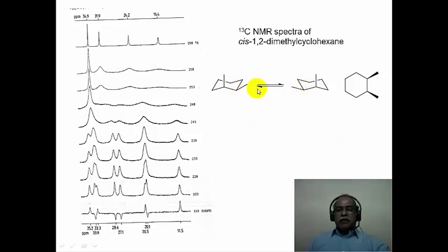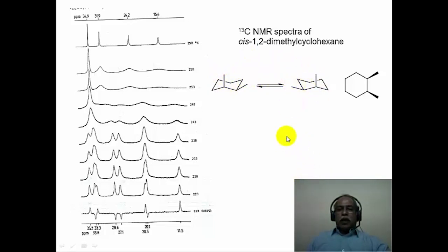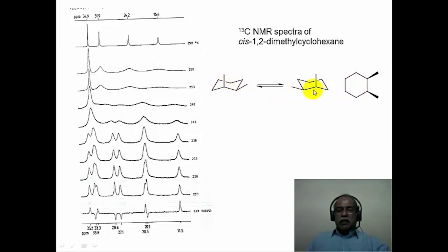The transition state for chair-to-chair interconversion resembles a planar structure with a plane of symmetry, making it achiral, while the two chair conformations are chiral. A DEPT spectrum is used to distinguish CH2 carbons (negative peaks) from CH and CH3 carbons (positive peaks). If the molecule is frozen without conformational interconversion, one sees 8 signals: 4 CH2 signals (negative phase), 2 CH signals, and 2 CH3 signals in a 1:1 enantiomeric mixture — since enantiomers are indistinguishable by NMR.